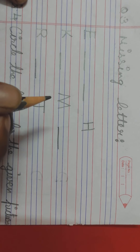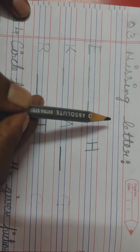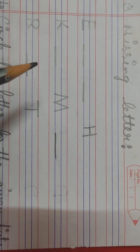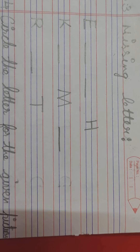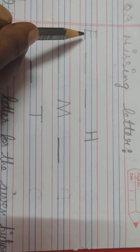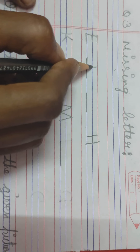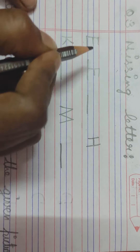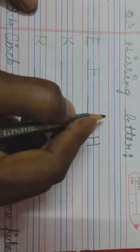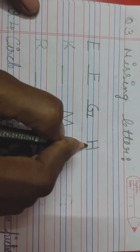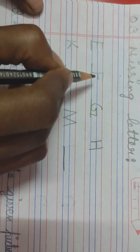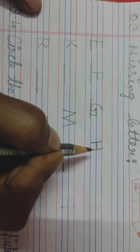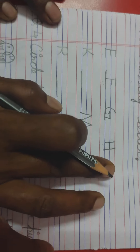Going to the next question — question number 3, missing letter. You have to write the letters which are missing. Starting from letter E, then what will come? F. So E, F, then G, H — E, F, G, H. This line is complete.